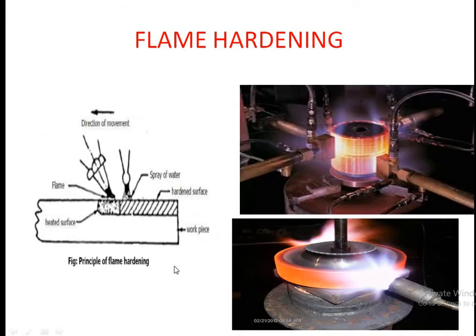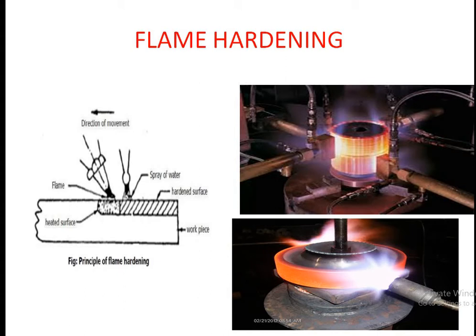The principle of flame hardening is illustrated here: the flame moves in one direction across the part, immediately followed by a water spray — this is the progressive method. In another configuration, the part rotates while four stationary flames heat it from all directions simultaneously, with simultaneous cooling. This is how the flame hardening process is carried out.